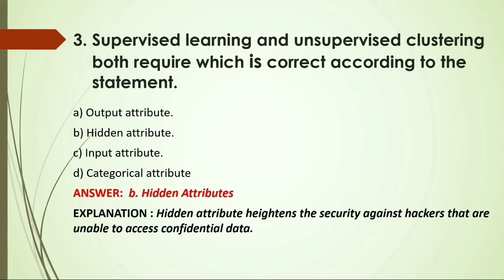MCQ: Supervised learning and unsupervised clustering training both require which of the following? Options: A) Output attribute; B) Hidden attribute; C) Input attribute; D) Categorical attribute. Answer: B, hidden attribute, because it heightens security against hackers who are unable to access confidential data.